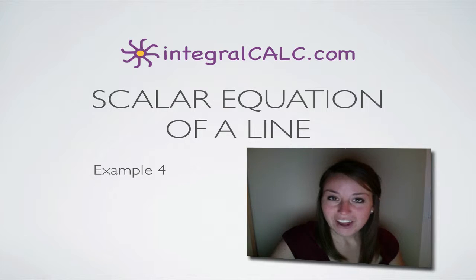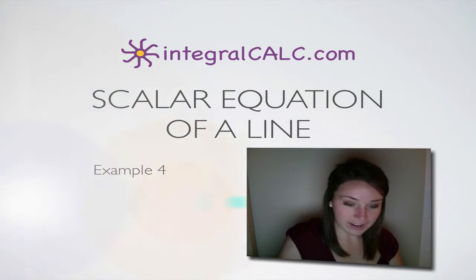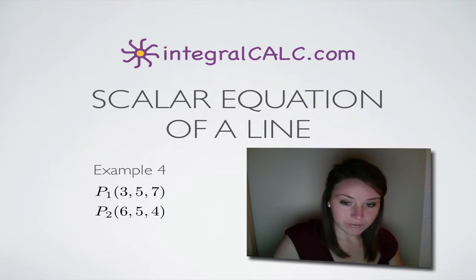Today we're going to be doing another example of how to find the scalar equations of a line. The information that we're given for this problem are two points: p₁ which is equal to (3, 5, 7) and p₂ which is equal to (6, 5, 4).